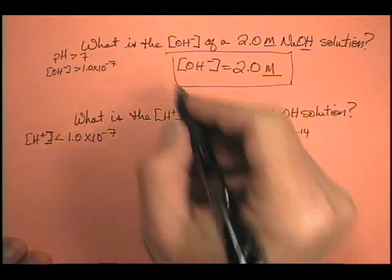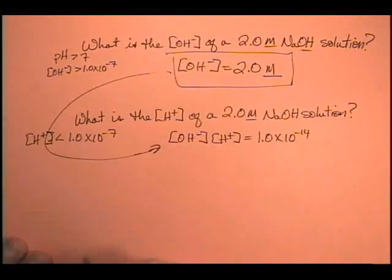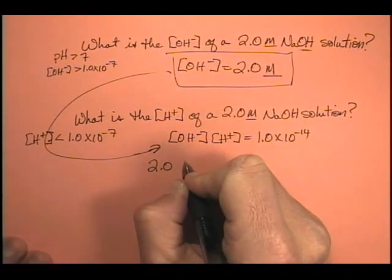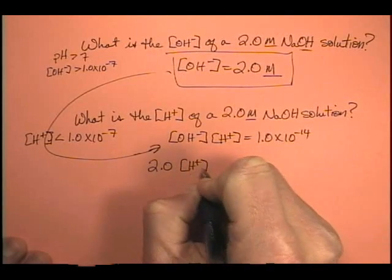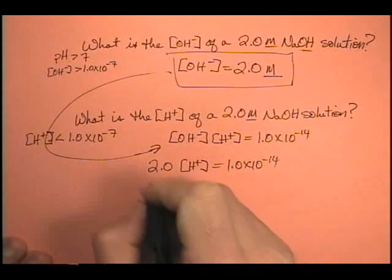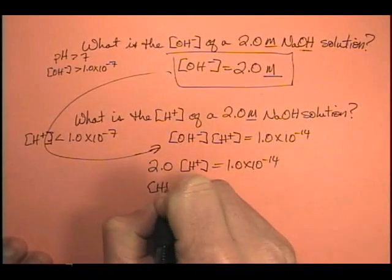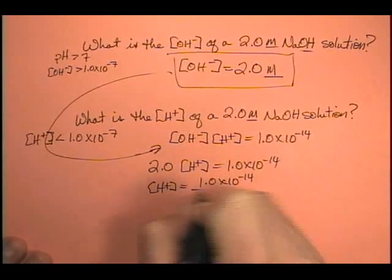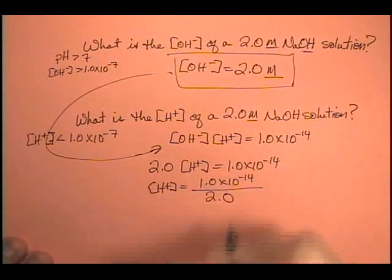So, what do we know? Well, we know the hydroxide ion concentration from up above. So, I'm going to go ahead and plug that in. 2.0 times our hydrogen ion concentration is equal to 1.0 times 10 to the minus 14. Do our little algebra. H plus is equal to 1.0 times 10 to the minus 14 divided by 2.0.